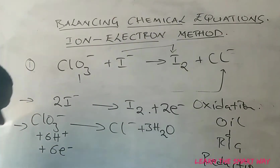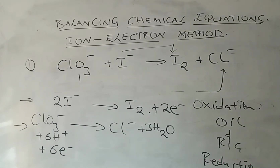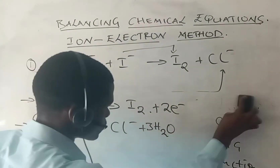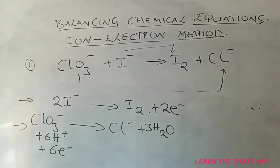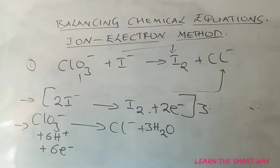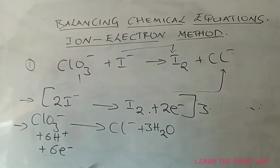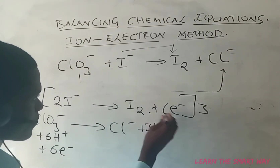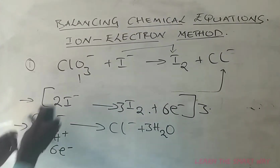We need to make sure the number of electrons lost and gained are equal across both half-reactions. Two electrons were lost in the first half-reaction and six were gained in the second. To balance, we multiply the first half-reaction by three, giving us six electrons on each side — three times two equals six.